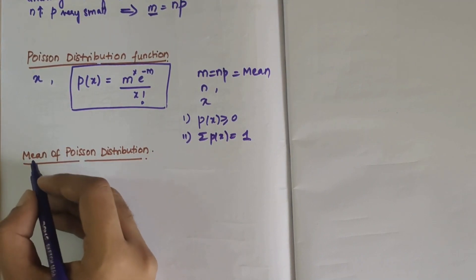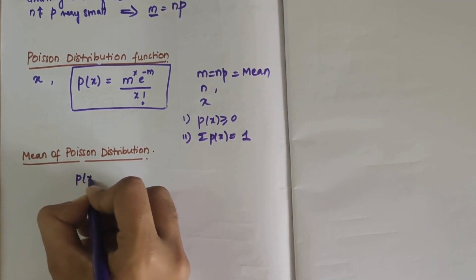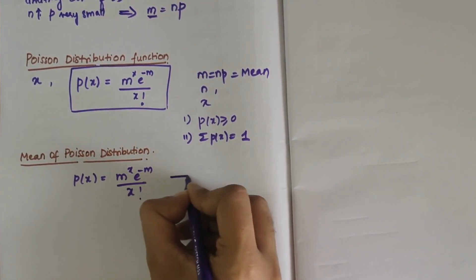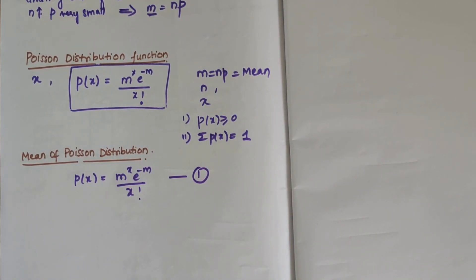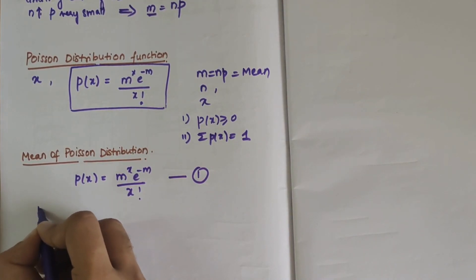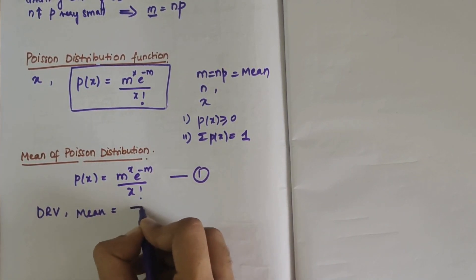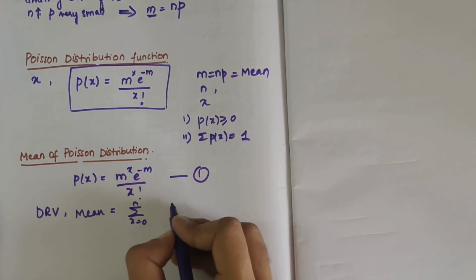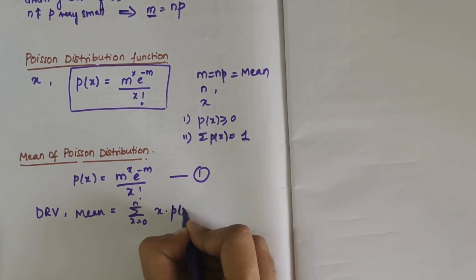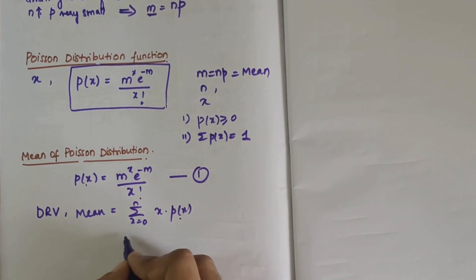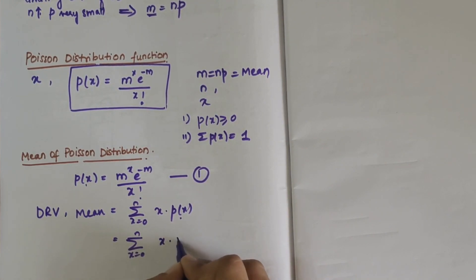We know the probability distribution function P(x) = m^x · e^(−m) / x!. This is our first equation. For a discrete random variable, mean = summation from x=0 to n of x · P(x). Substituting P(x), our equation becomes: summation of x · m^x · e^(−m) / x!.